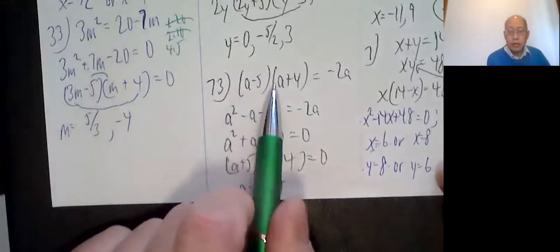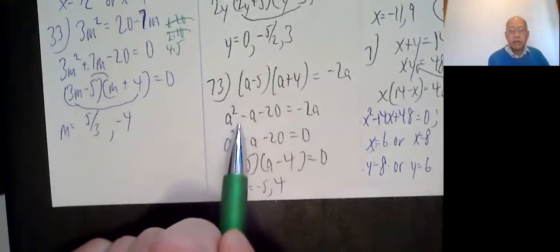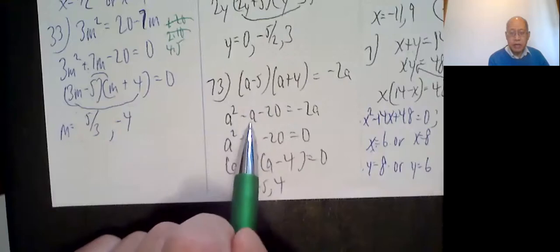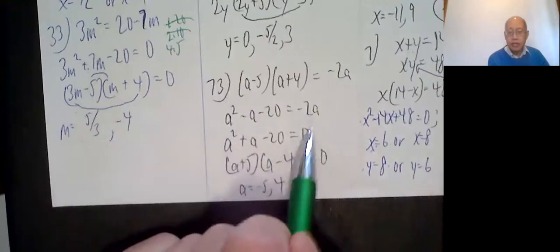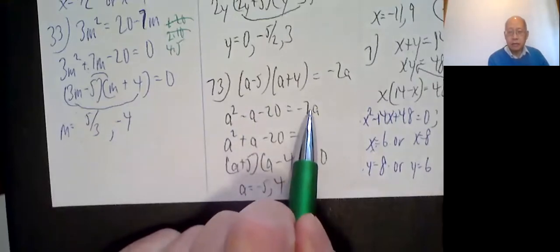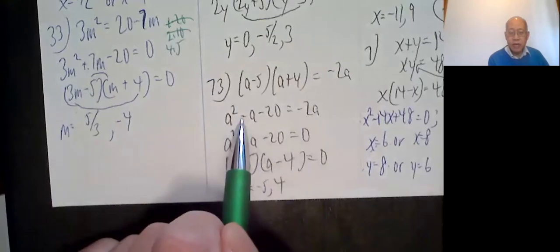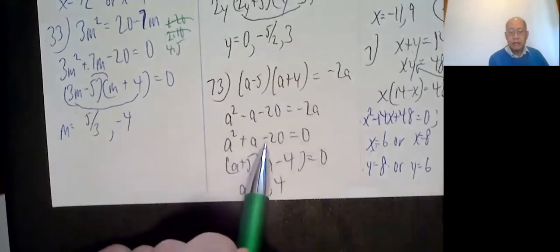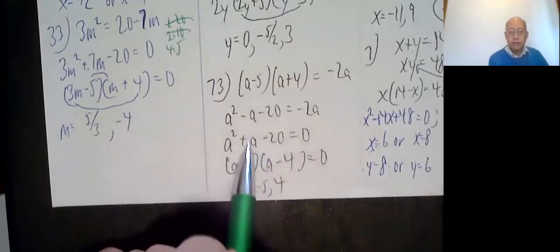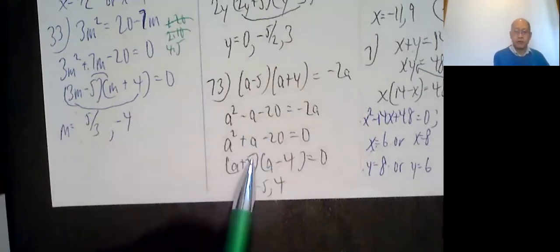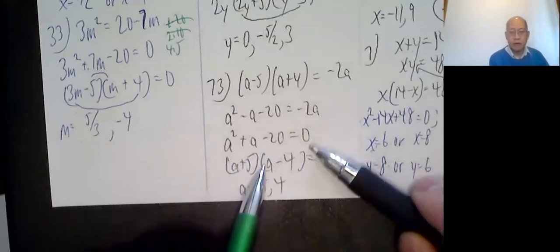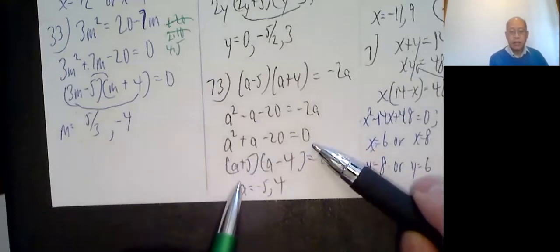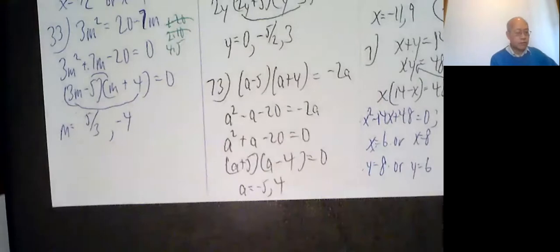Number 73: FOIL this out. a squared minus a minus 20 if you multiply that out. You want this to be 0, so I'll add 2a. If I add 2a to a negative a, I just make it a positive a. Minus means the signs are opposite, one's a plus and one's a minus. The coefficient here is 1, so what two numbers have a product of 20 and a difference of 1? 5 and 4. So a plus 5, a minus 4. a is either equal to negative 5 or positive 4.